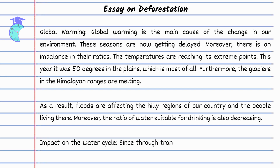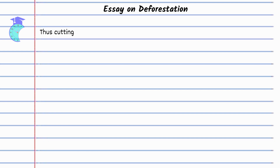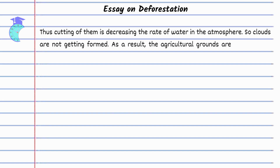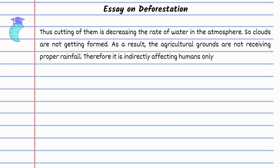Impact on the water cycle: since through transpiration, trees release soil water into the environment, cutting them down is decreasing the rate of water in the atmosphere. So clouds are not getting formed, and as a result, the agricultural grounds are not receiving proper rainfall. Therefore, it is indirectly affecting humans only.